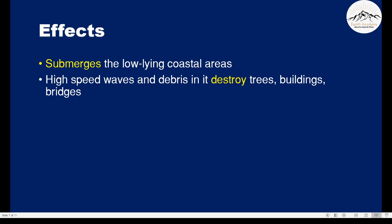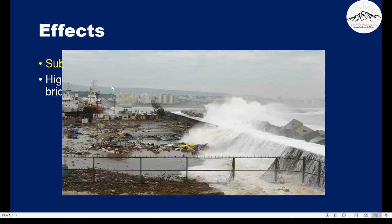What are the effects of a tsunami? Because of the huge inflow of water to the surfaces, it can submerge low-lying coastal areas. If they are very high-speed waves, they will collect a lot of debris — a lot of waste — and can destroy trees, buildings and bridges. As you can see, a huge wave has destroyed this entire low-lying area.